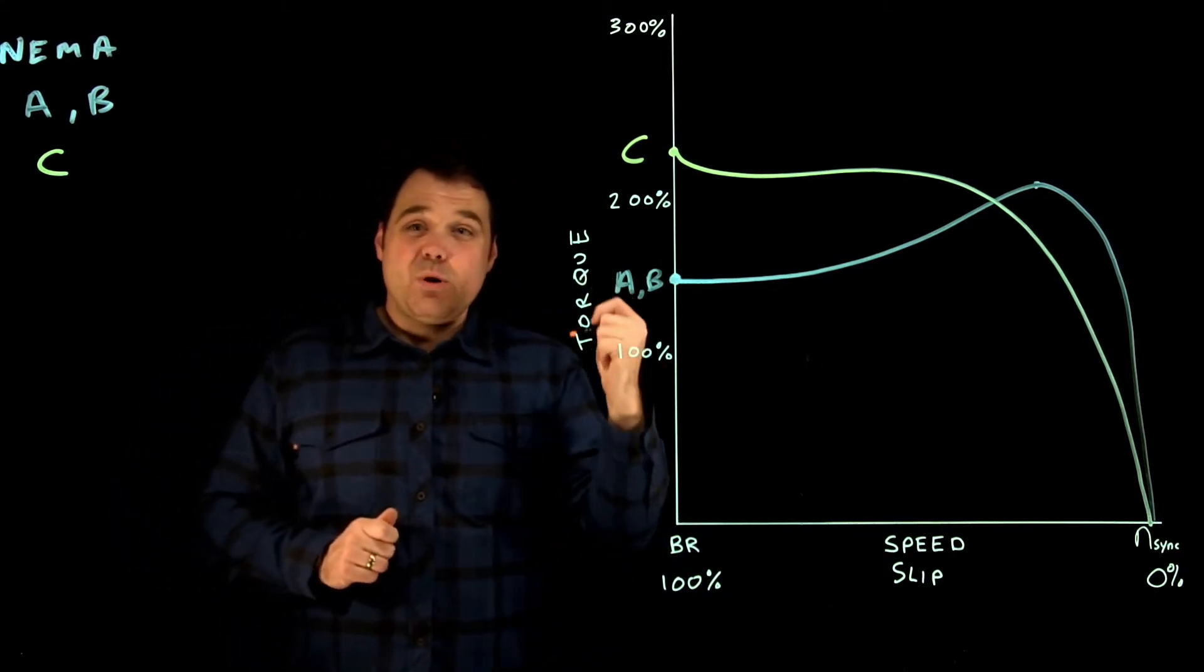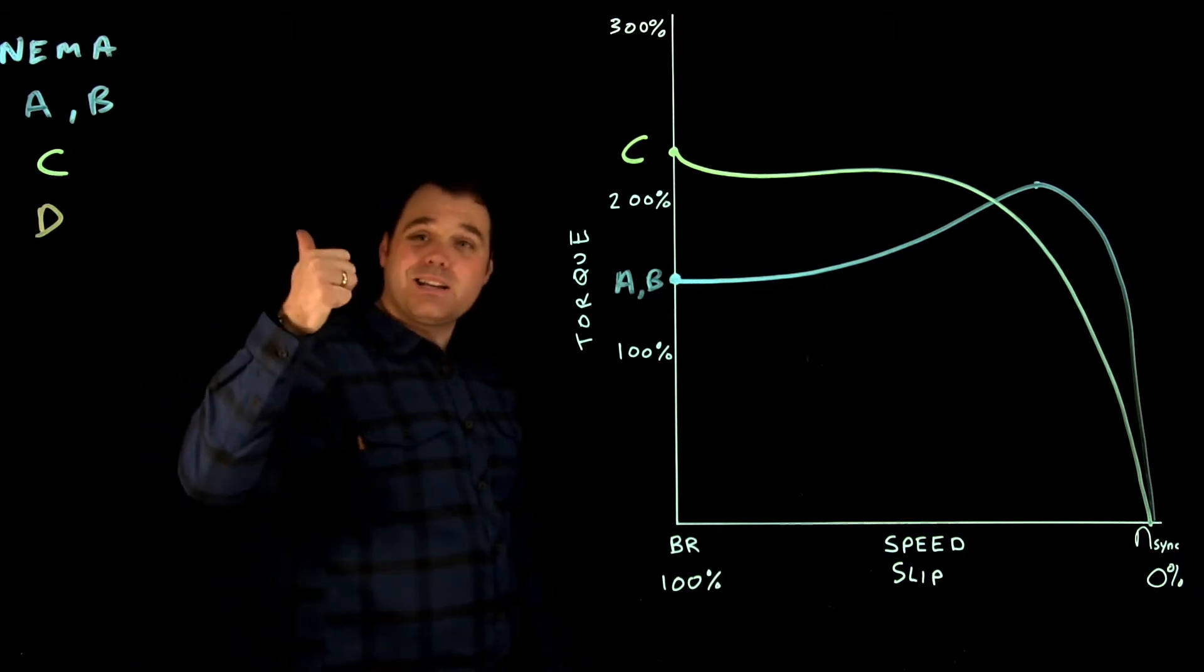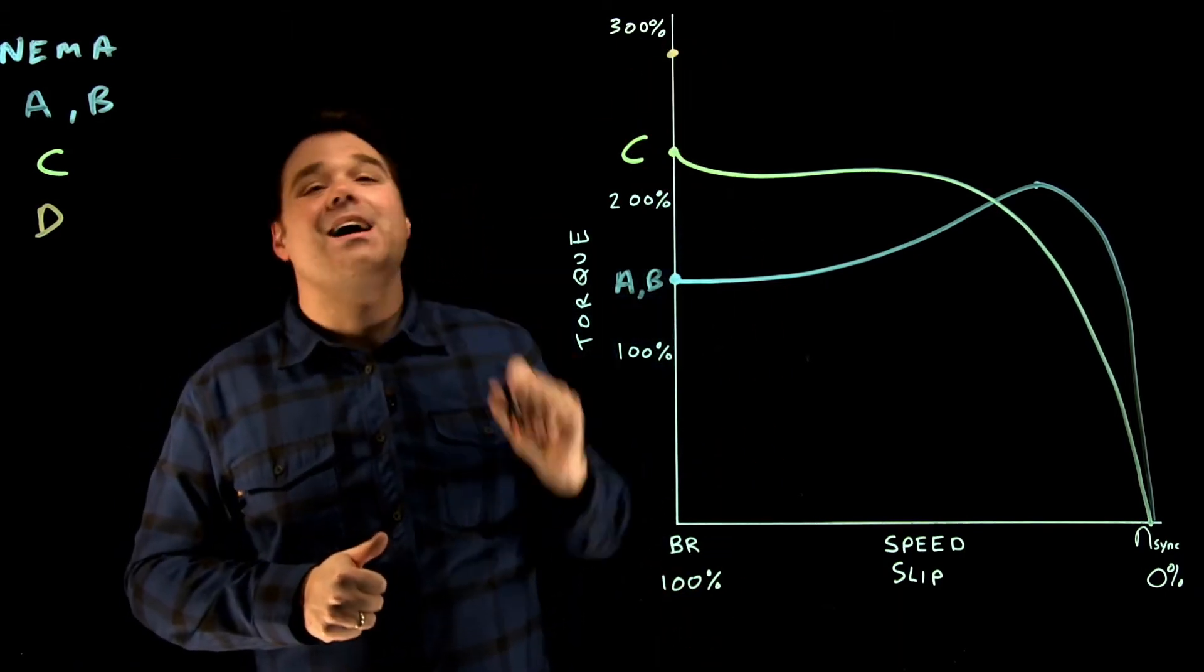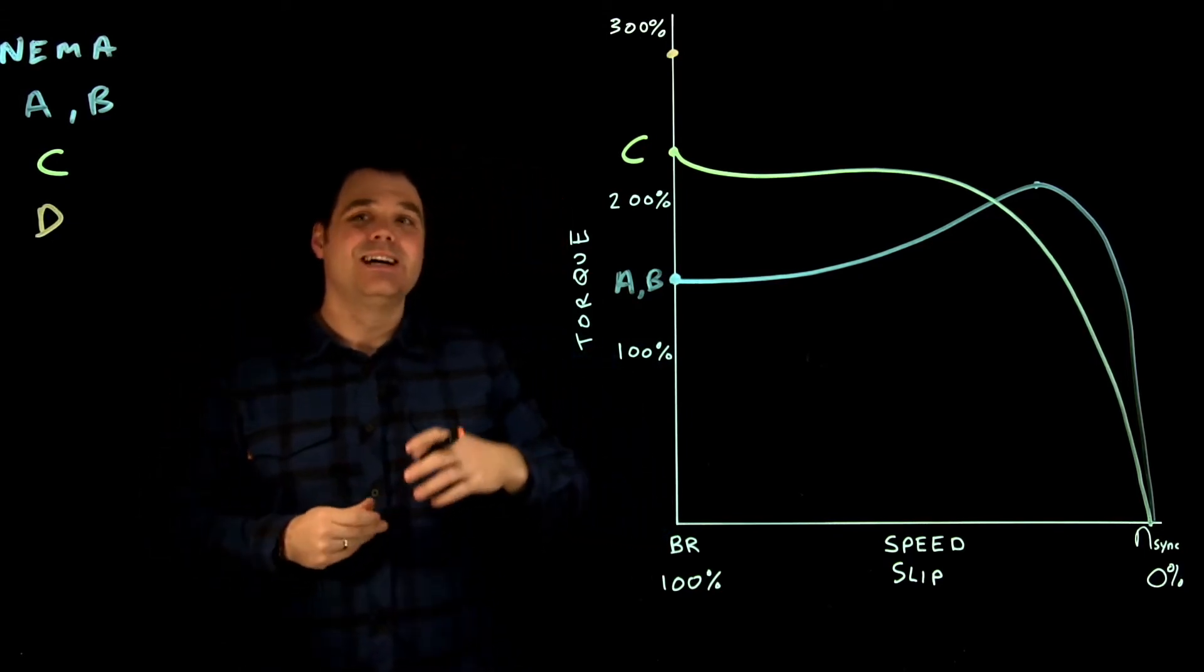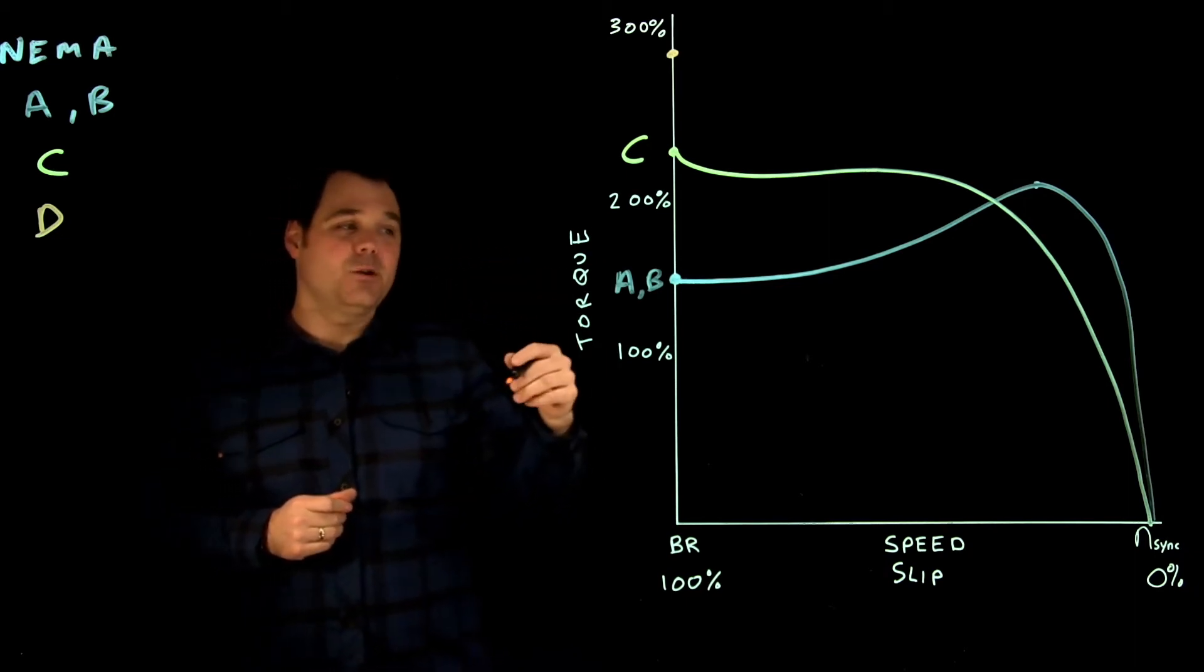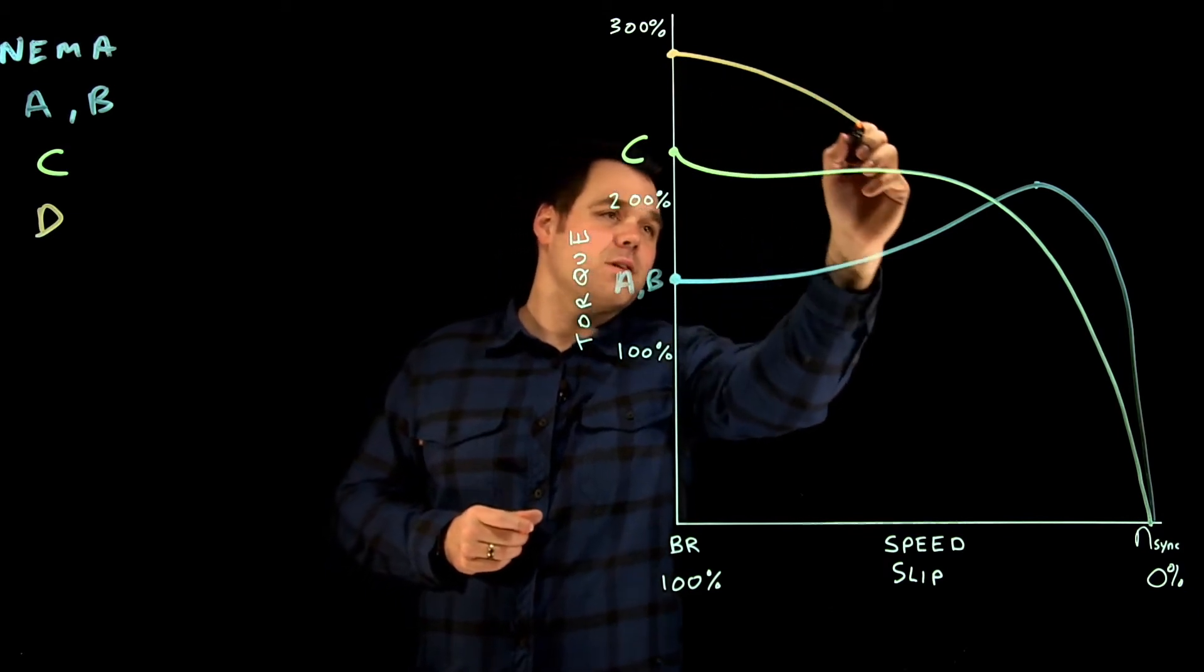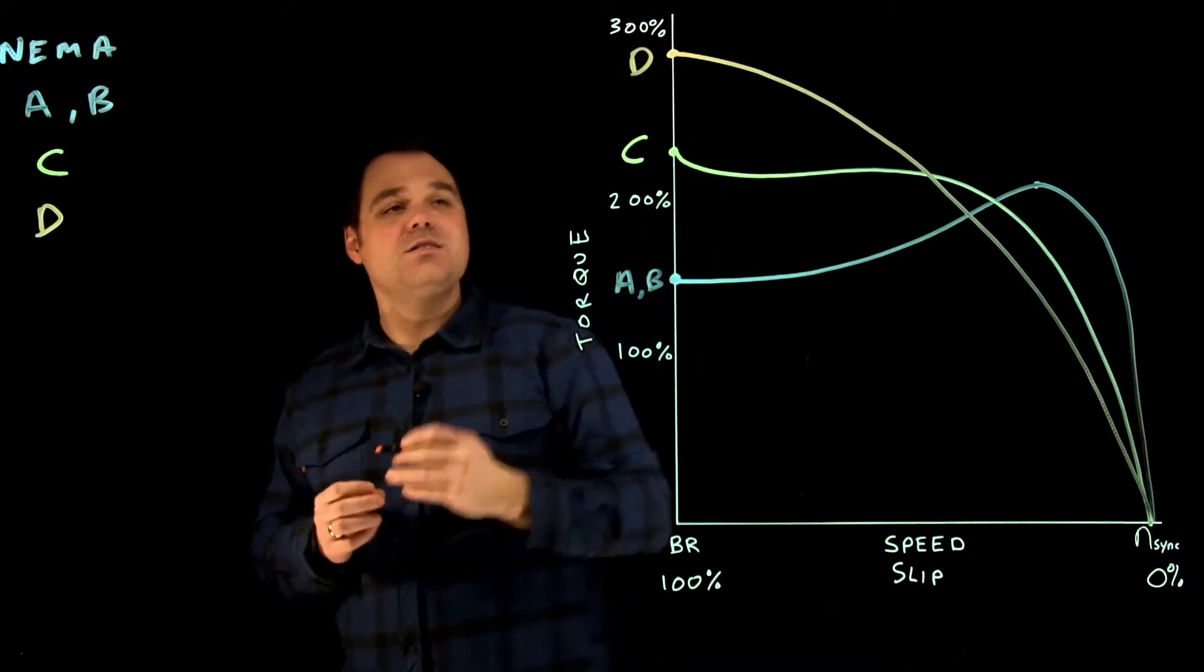Then with a NEMA rotor D. We like the D. The D has a very high starting torque, around 275%, and that's also where I get that peak torque. The problem with the D is it's very inefficient. So it's a great start, but it's a little bit inefficient. So this torque curve for the D ends up looking something like that.